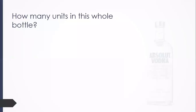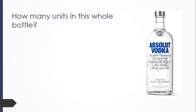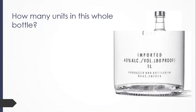Now I'd like you to work out how many units are in this bottle of vodka — let's say I drank the whole bottle. It's a 40% alcohol vodka in a one litre bottle. Going back to the calculation, think about how many units are in this one litre vodka at 40% alcohol concentration. Pause the video and do your calculation.